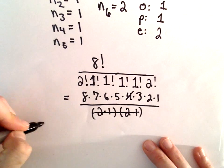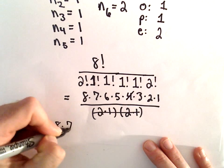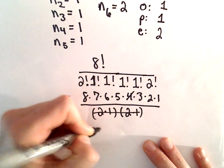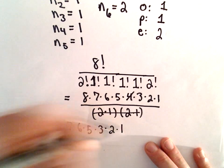So the value we'll have to compute will be 8 times 7 times 6 times 5 times 3 times 2 times 1.